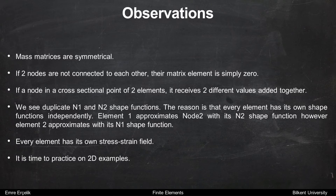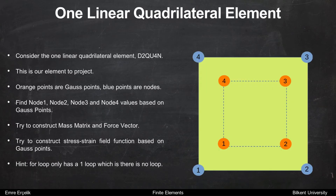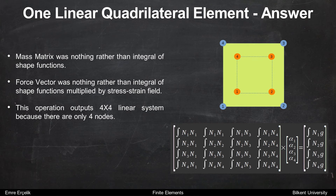We can also use these observations on 2D examples — they are very similar. Consider one linear quadrilateral element. This is our only element to project. Again, Gauss points are the orange points and the blue points are nodes. Find node 1, node 2, node 3, and node 4 values based on Gauss points. Try to construct the mass matrix and force vector, and the stress-strain field function based on Gauss points. Since there is only one element, the for loop has only one loop — meaning no loop. The mass matrix is nothing other than an integral of shape functions, and the force vector is calculated the same way as in former examples. This operation outputs a 4x4 linear system because there are only four nodes.